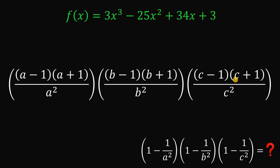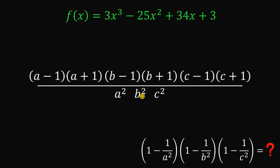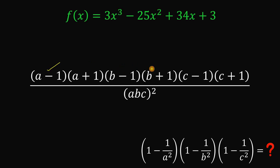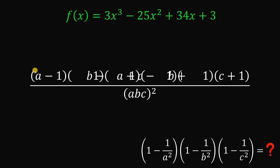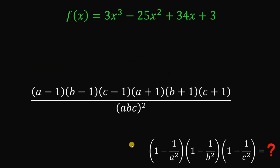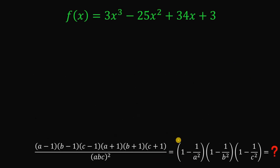Multiplying these three expressions gives the product of all numerators over a²b²c², which simplifies to (abc)². Rearranging, the numerator becomes the product (a - 1)(b - 1)(c - 1) multiplied by the product (a + 1)(b + 1)(c + 1), all over (abc)². This is equivalent to our original expression.